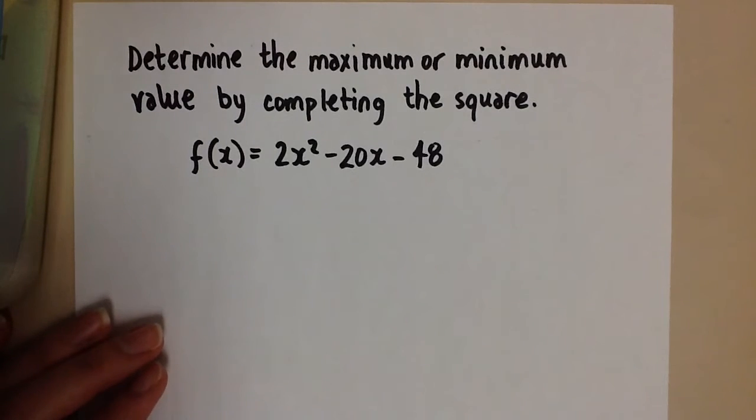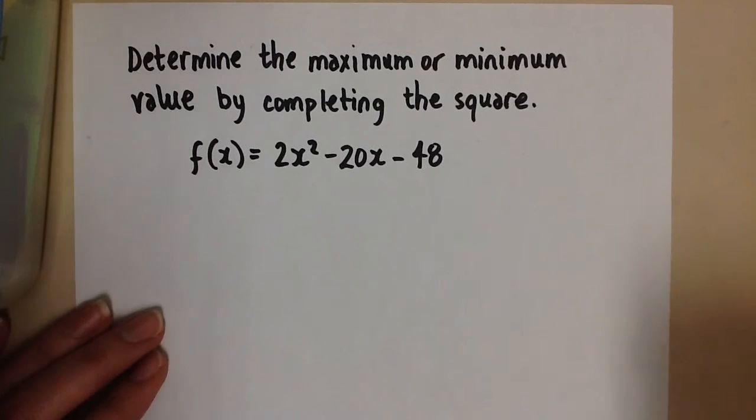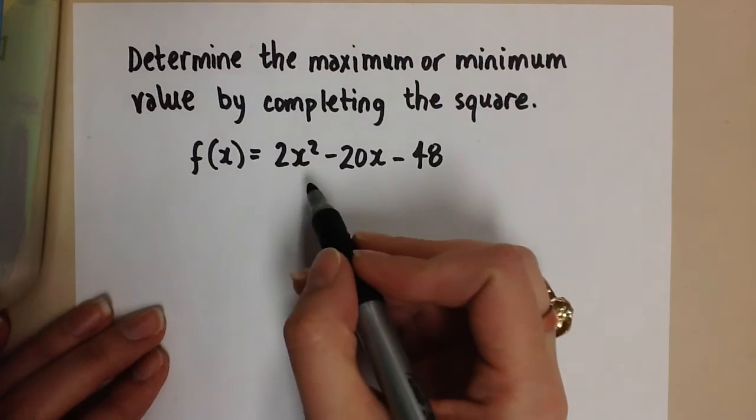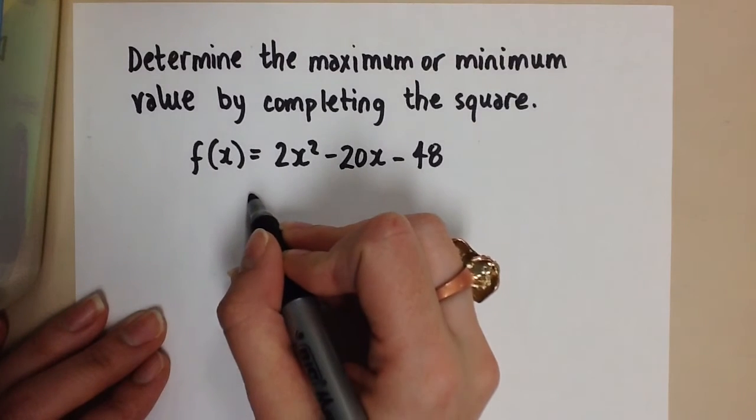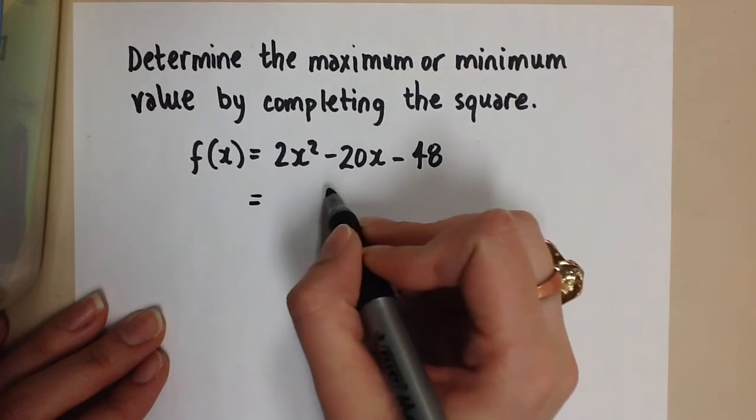Here we're going to find the maximum or the minimum of this quadratic by completing the square. So to start, we see that the x squared term has a coefficient of 2. We want to factor that out of the first two terms only.